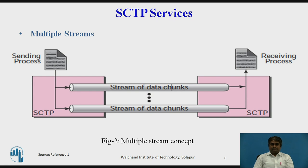Regarding multiple streams: TCP is a stream-oriented protocol, and each connection between a TCP client and a TCP server involves one single stream. The problem with this approach is that loss at any point in the stream blocks the delivery of the rest of the data. This can be acceptable when transferring text, but not when sending real-time data such as audio or video. SCTP allows multi-stream service in each connection, which is called an association in SCTP terminology. If one stream is blocked, the other streams can still deliver their data.